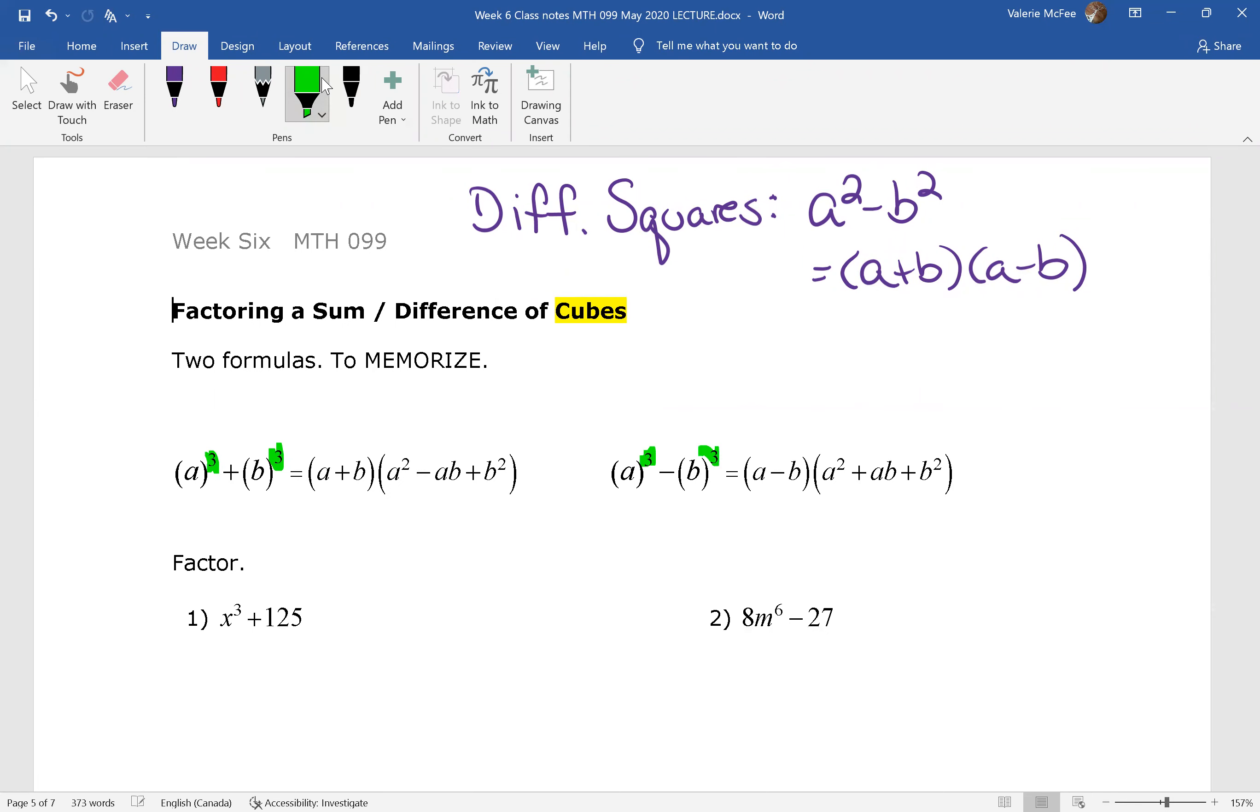Now you should see that the formulas are almost the same. Each formula has one minus sign. They're just in different places. I usually remember that if it's a difference of cubes, a³ - b³, the negative sign comes right away. When it's a sum of cubes, then the negative sign is inside that trinomial.